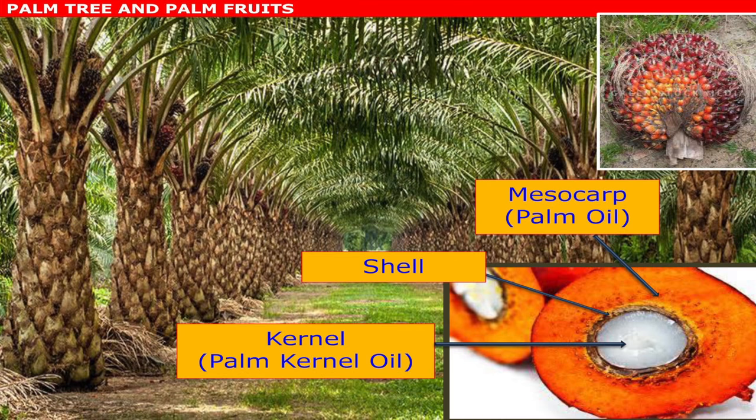This is how a palm oil plantation looks like. If you look at the tree on top here, you can see the fruit bunches. It's called fresh fruit bunches, and once it's harvested it will be looking like this.